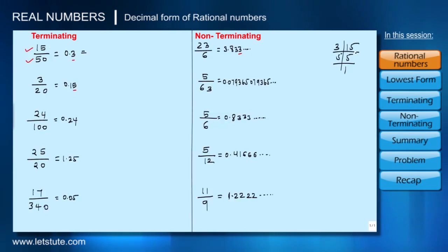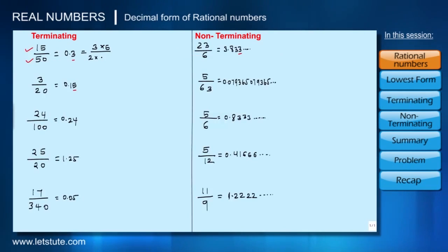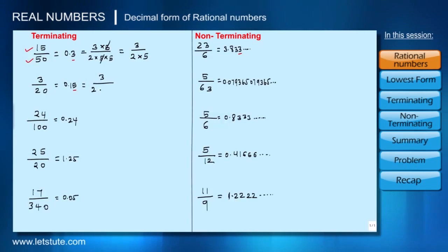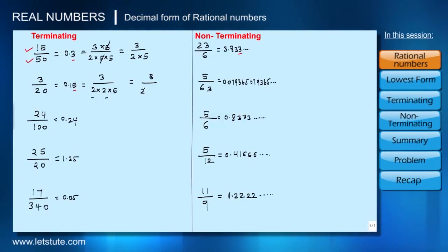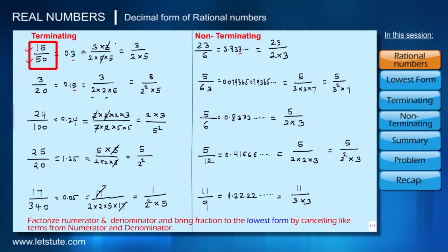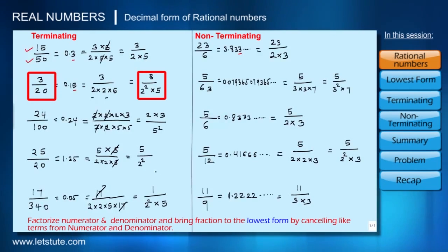For example, 15 can be written as 3 × 5 and 50 can be expressed as 2 × 5 × 5. We cancel the common 5 and rewrite the fraction as 3/(2 × 5). Similarly, 3/20 can be written as 3/(2² × 5). After factorizing numerator and denominator for all fractions, 15/50 becomes 3/(2 × 5) and 3/20 becomes 3/(2² × 5), and so on.